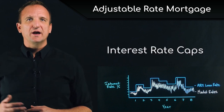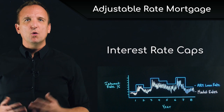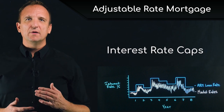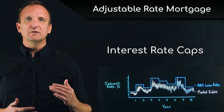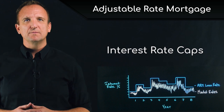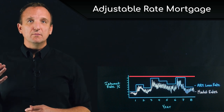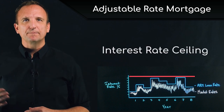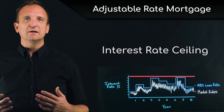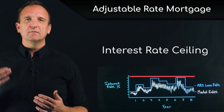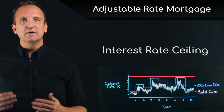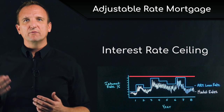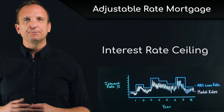Interest rate change caps protect from wild swings in the interest rate and make the rate much more steady throughout the life of the loan. The maximum potential interest rate is what's called the interest rate ceiling, and the ceiling is the highest level that the composite rate can ever be, regardless of what the index and the margin add up to.